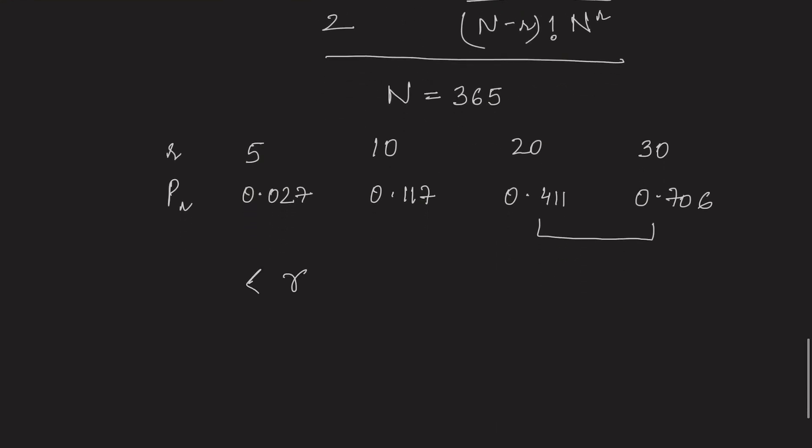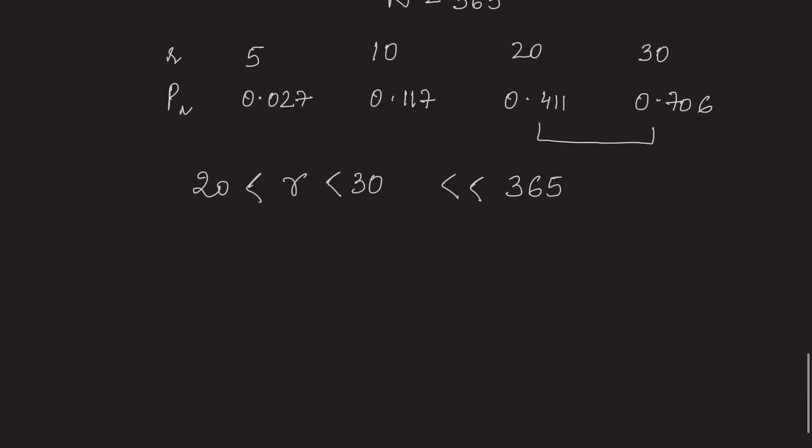Here we see that r lies in the range between 20 to 30 and this number is very small compared to 365. So, we will use the approximation e to the power minus x equals 1 minus x plus x square by 2 factorial minus x cube by 3 factorial. And for small x, e to the power minus x can be approximated as 1 minus x.